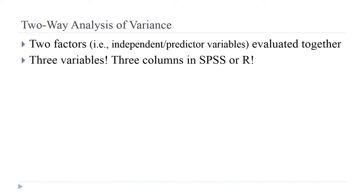So you've got three variables total, which means you need three columns in SPSS or R — two of them are going to be categorical, and one of them is going to be numerical.